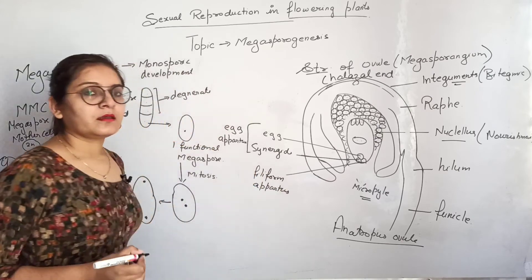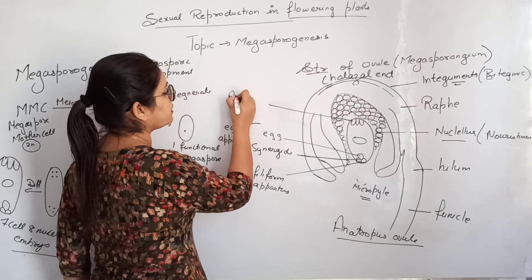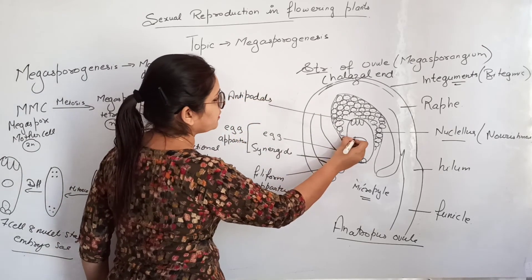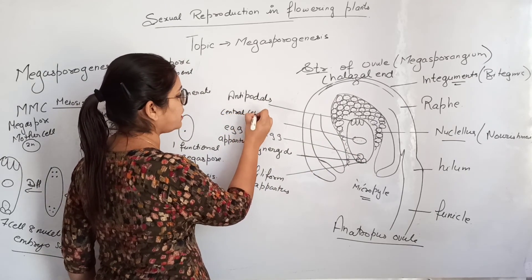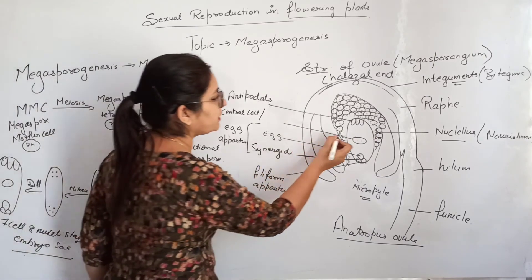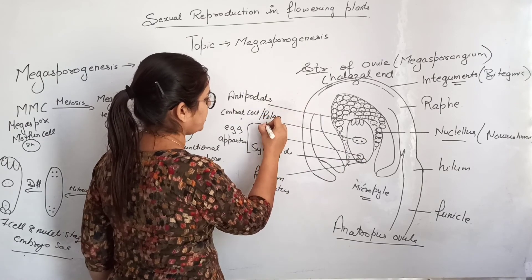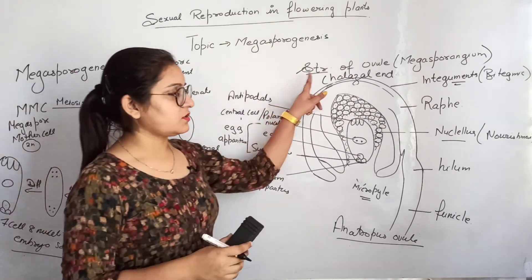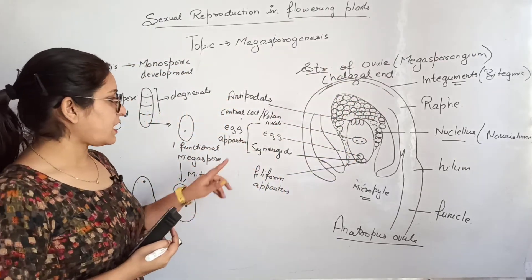At the base of the synergids are small finger-like structures known as the filiform apparatus, which help catch pollen grains easily. On the chalazal side, three cells are present known as antipodals. In the center is the central cell, also called polar nuclei, because the cell wall forms over two nuclei.